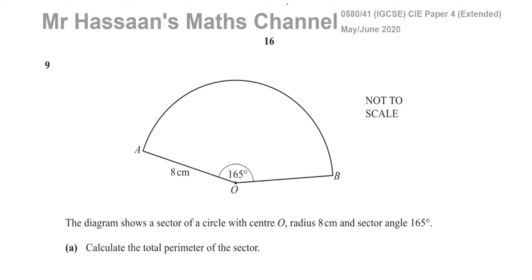Welcome back to Mr. Hassan's Math Channel. I'm now going to be answering question number 9 from the IGCSE Cambridge Paper 4 Variant 1 from May-June 2020. This question is about areas and volumes — mensuration.